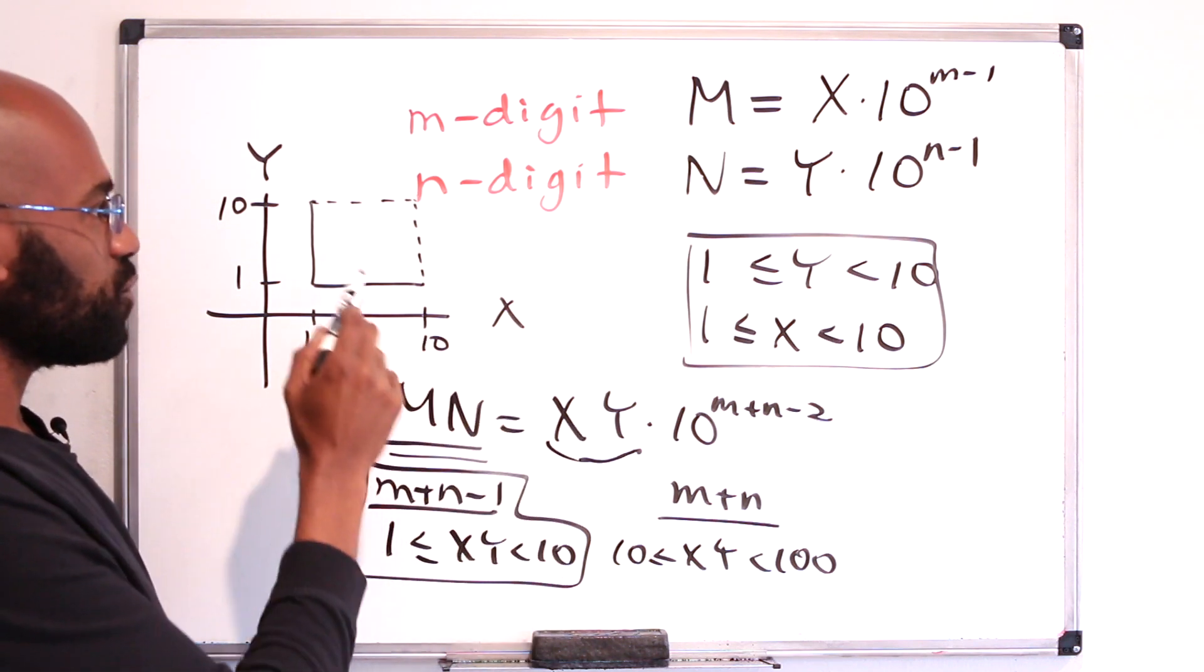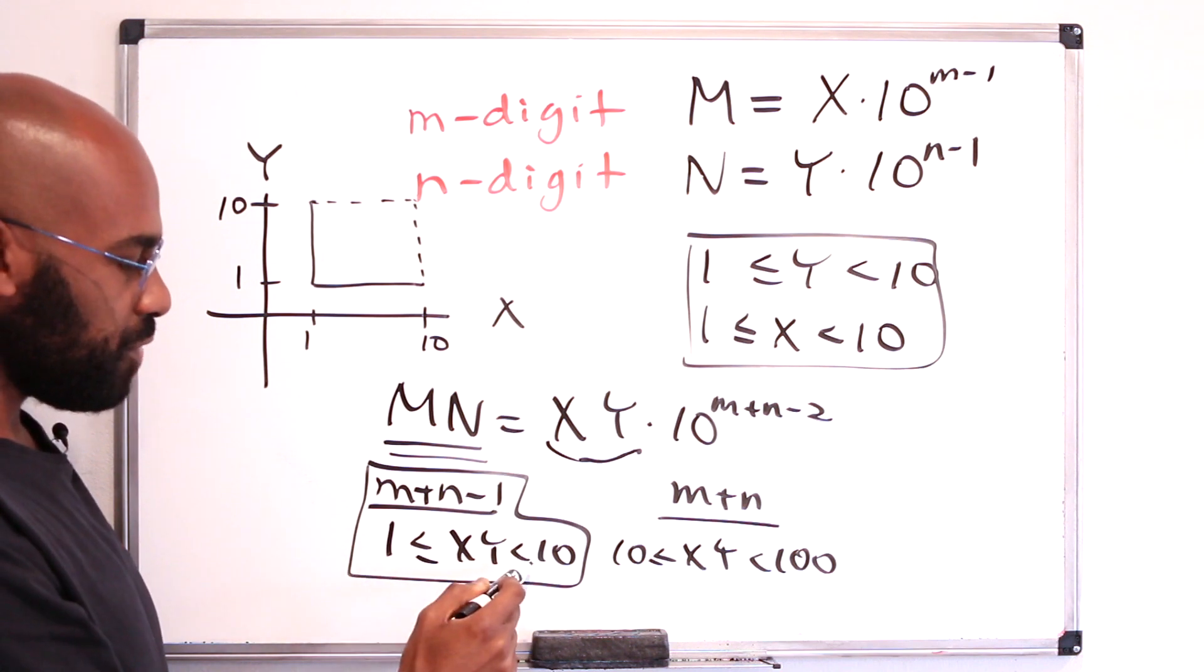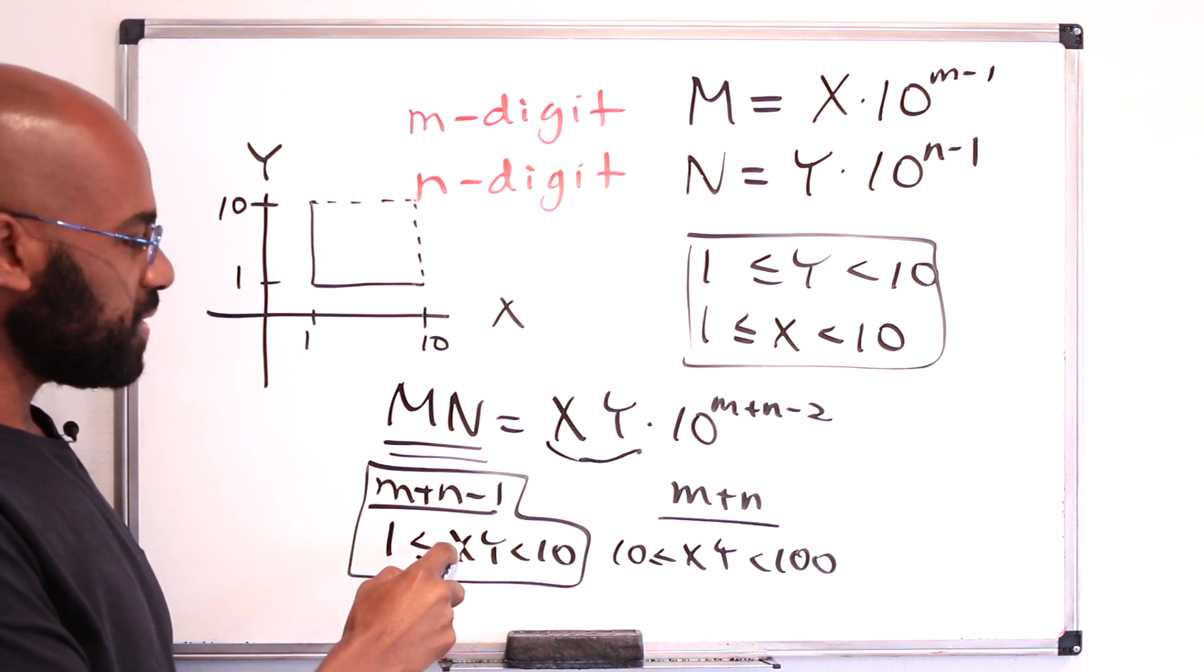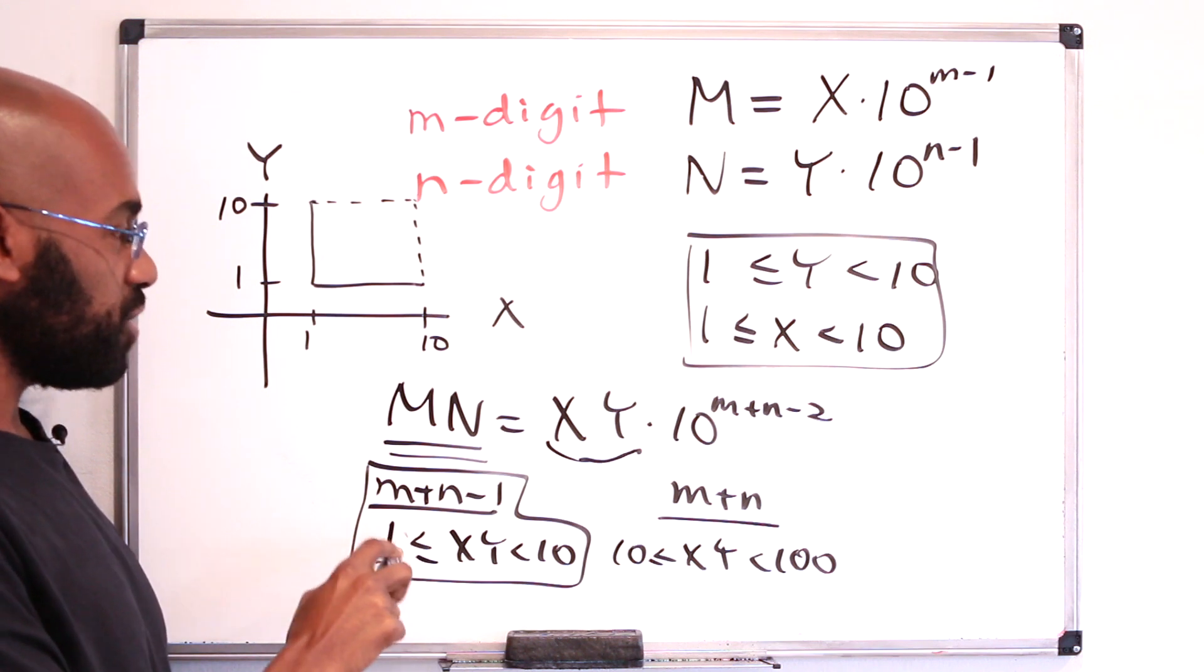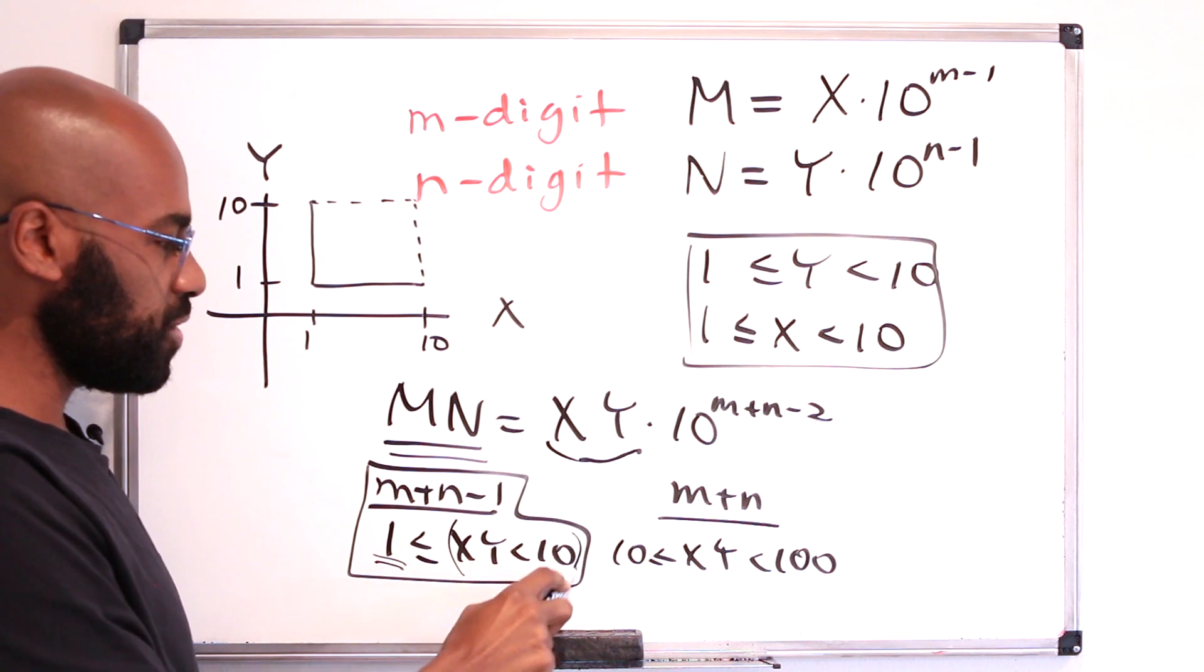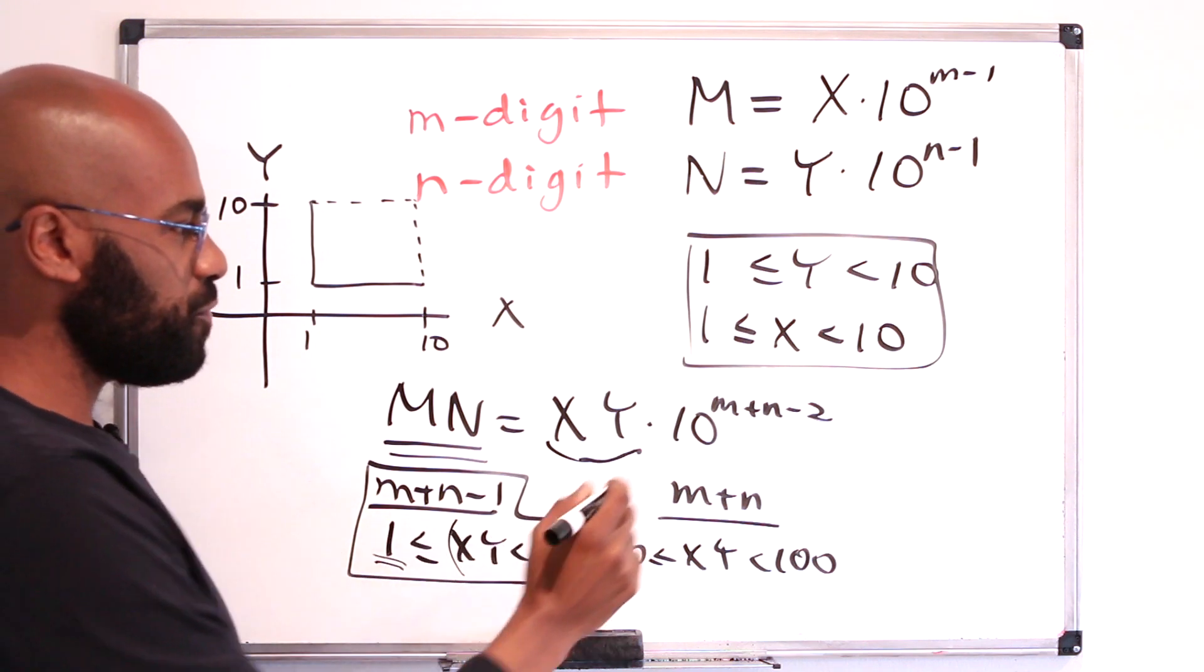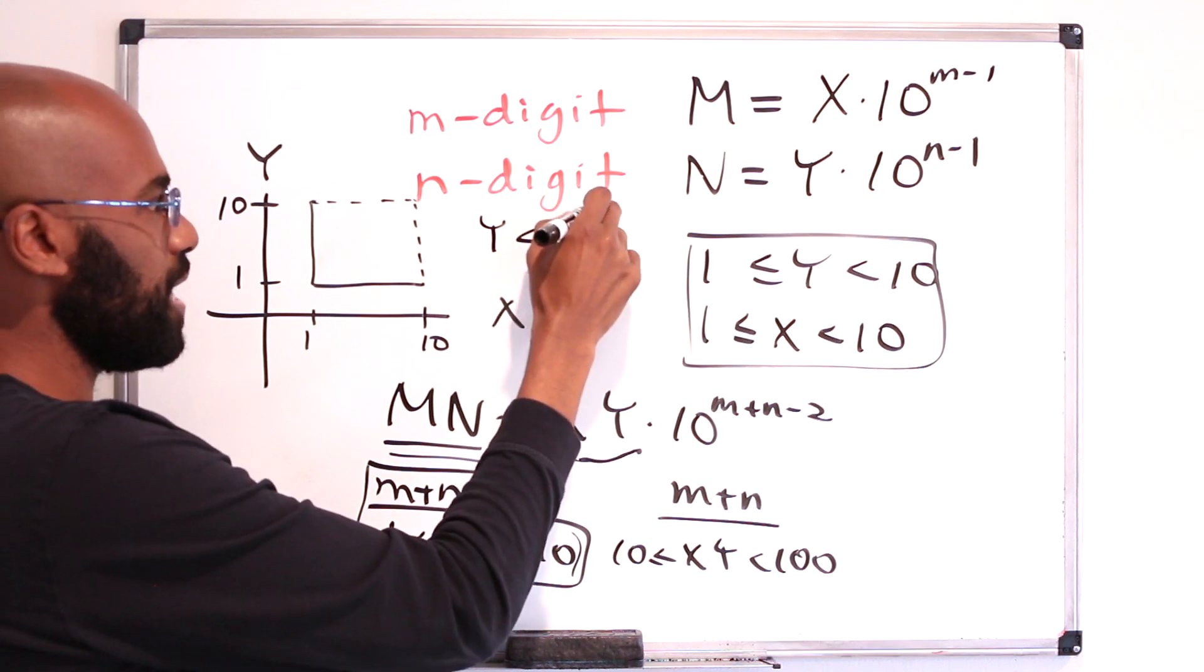So let's look at the fraction of outcomes that actually are m plus n minus 1 digit. They correspond to pairs xy that lie in this region and satisfy this inequality. We only really need to consider this inequality here, which can be rewritten as saying that y is strictly less than 10 over x.